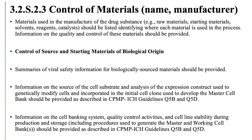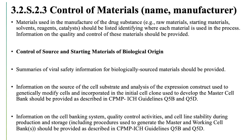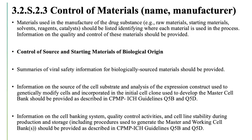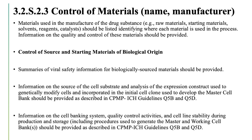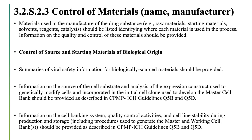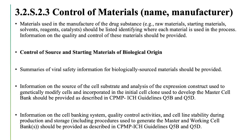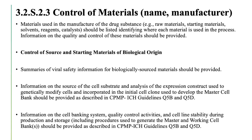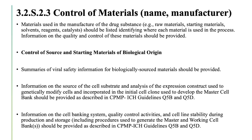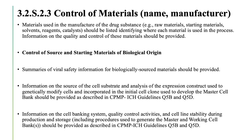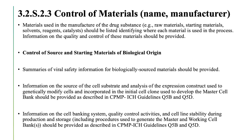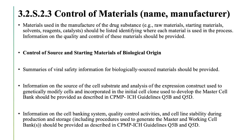Information on the source of the cell substrate and analysis of the expression construct used to genetically modify cells, incorporated in the initial cell clone used to develop the master cell bank, should be provided as described in CPMP ICH Guidelines Q5B and Q5D. Information on the cell banking system, quality control activities, and cell line stability during production and storage, including procedures used to generate the master and working cell bank, should be provided as described in CPMP ICH Guidelines Q5B and Q5D.